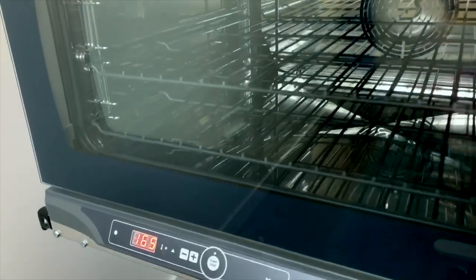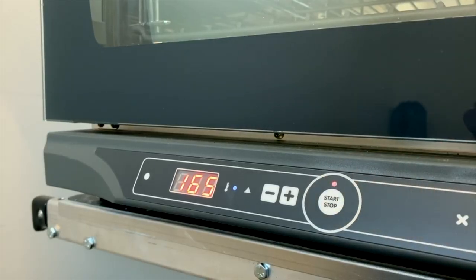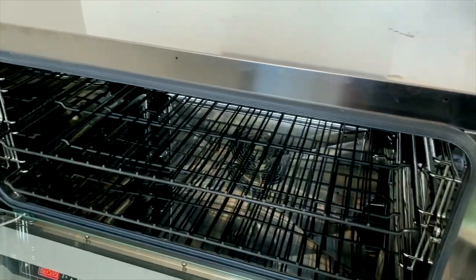The oven is preset to 165 degrees. All you need to do is turn your oven on and let it heat to temperature. Then place the mask on the rack.